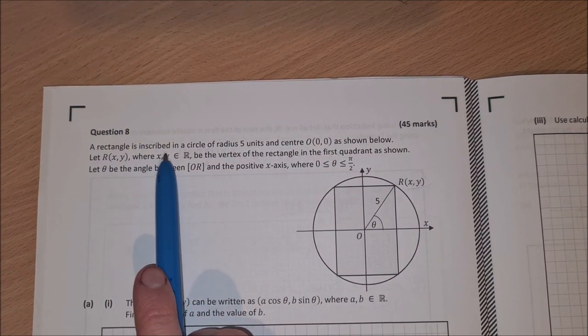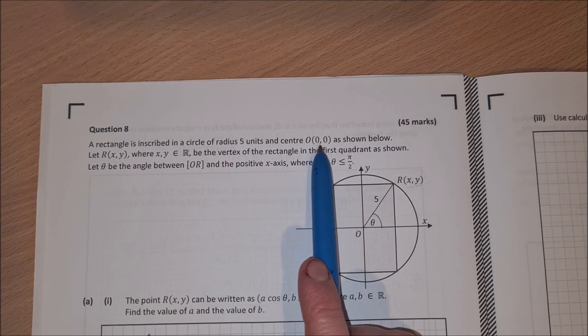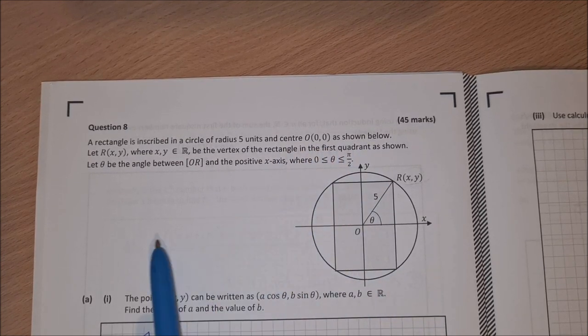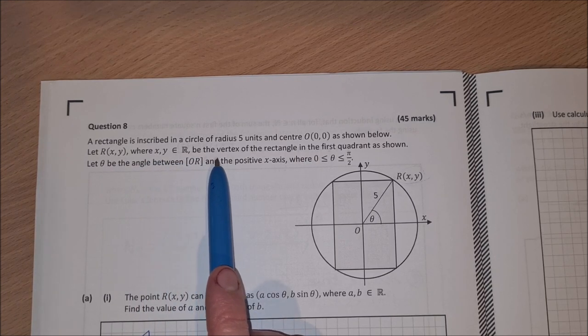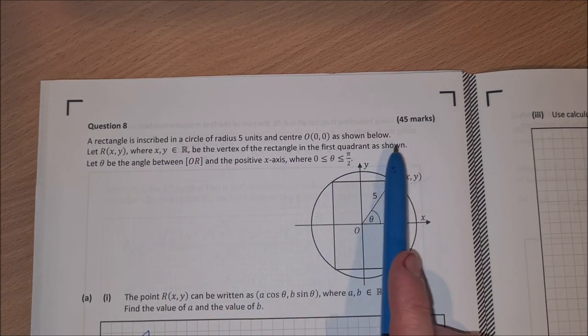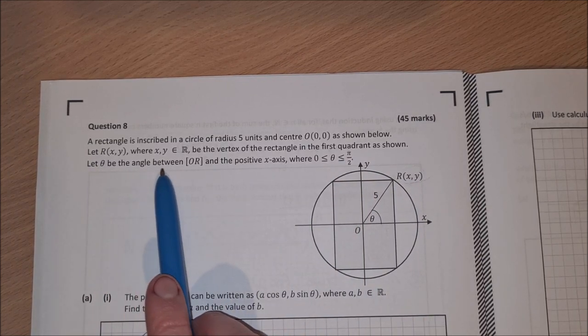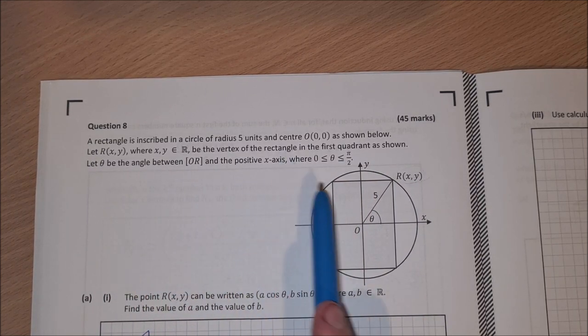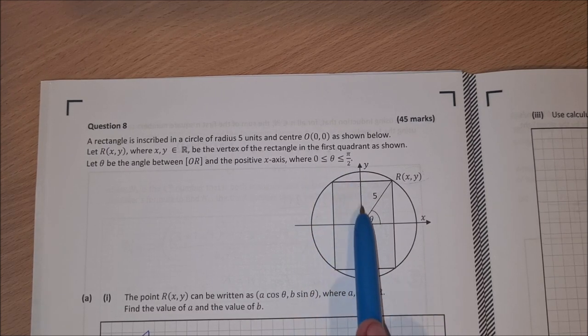It says a rectangle is inscribed in a circle of radius 5 units and centre O, which is at (0, 0), as shown below. Let R, which is (x, y), where x and y are elements of R, be the vertex of the rectangle in the first quadrant. So here's R up here. Let theta be the angle between OR and the positive x-axis, that's theta there, where theta is between 0 and pi over 2.